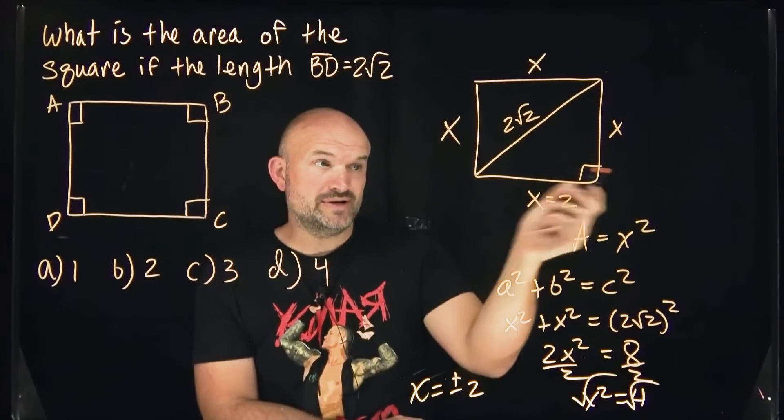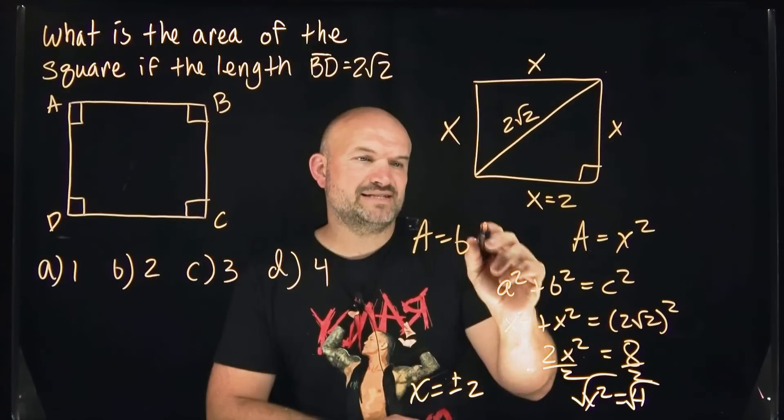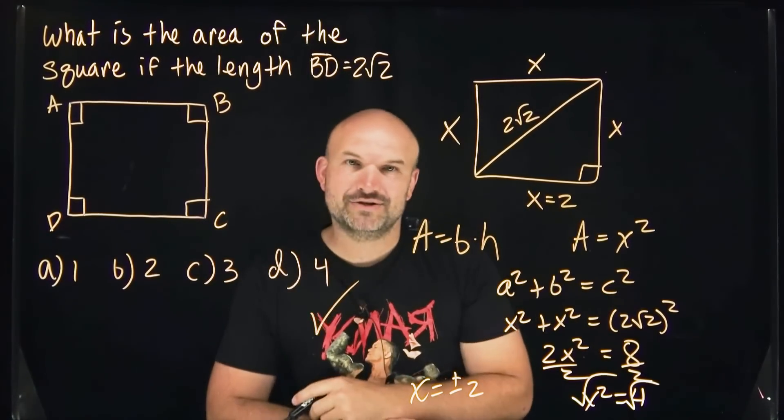So now to find the area of the square, we know that the area is just going to be base times height, which again, they're exactly the same. 2 times 2 is going to give us 4, which is your answer, D.